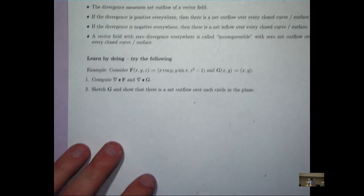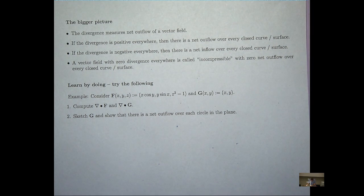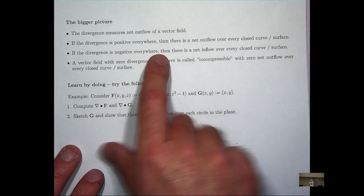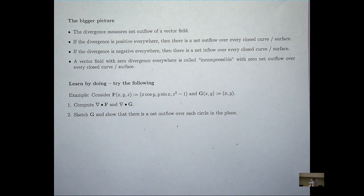So let's look at the bigger picture. Now, the divergence of a vector field measures the spread of the vector field or a net outflow over each closed curve or surface containing the point of interest. If the divergence is positive everywhere, then there's net outflow over every closed surface or curve. If the divergence is negative, the opposite is true—there's a net inflow over every closed curve or surface. If the vector field has zero divergence everywhere, then we call the vector field incompressible. And there's neither a net outflow nor a net inflow. There's just zero.